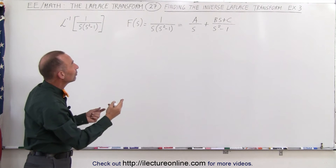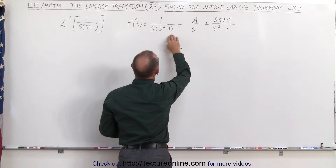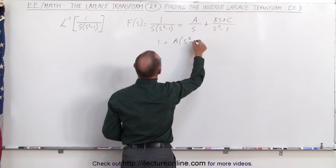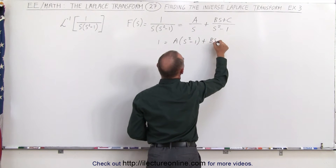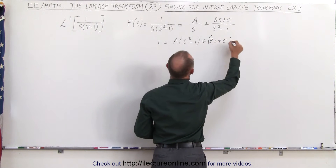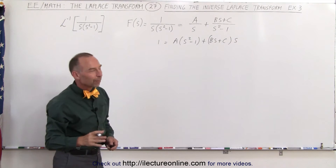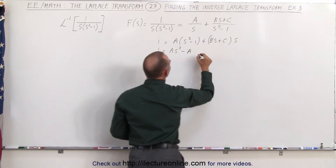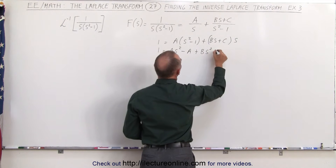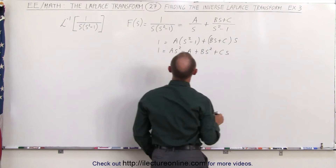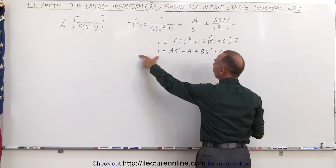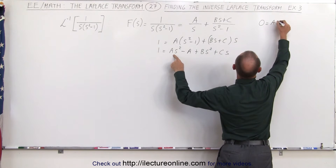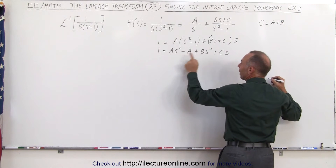What we can do is multiply both sides of the equation by the common denominator. So this becomes 1 equals a times s squared minus 1, plus b·s plus c, times s. Getting rid of the parentheses, this becomes 1 equals a·s squared minus a, plus b·s squared plus c·s. On the left side we don't have an s squared term, but on the right side we have two, so 0 equals a plus b.